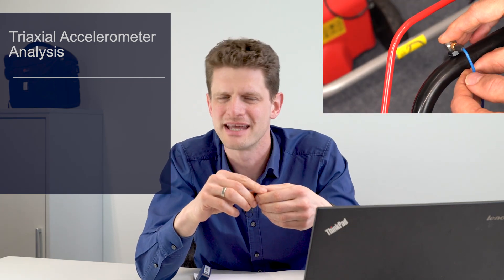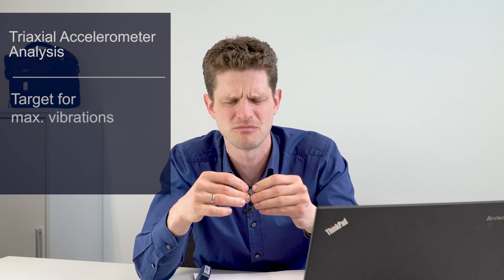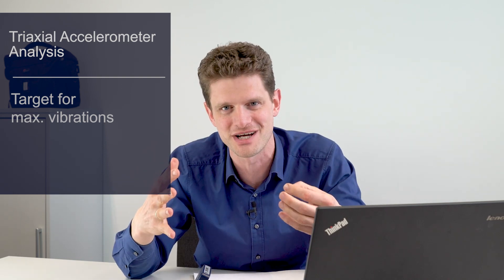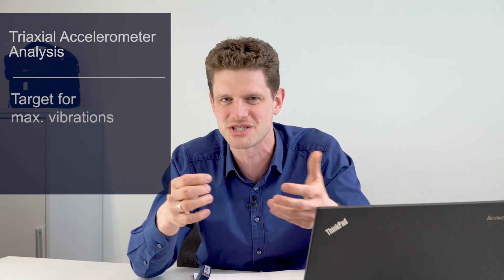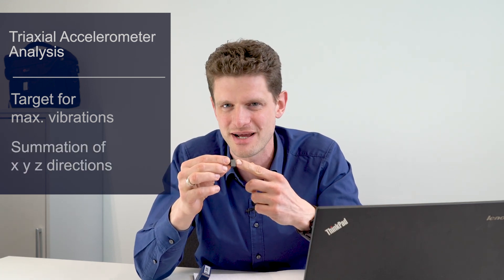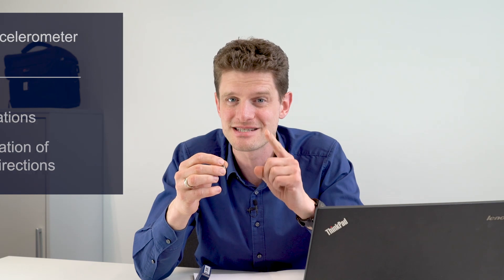We have used a tri-axis accelerometer to measure the vibration on the handle of our lawnmower. Now we want to define a maximum target which is still allowed, but not a separate target for x, y, and z direction — only one overall target for the complete vibration, regardless of direction. So we need to make a summation of all three directions. This is tricky, so I will explain how to do this and how not to do this.